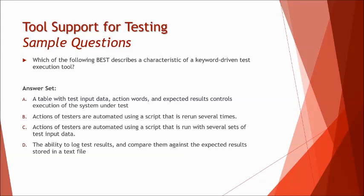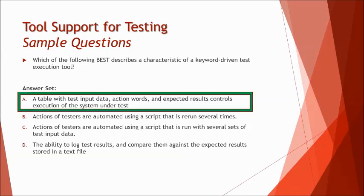Option B: actions of the testers are automated using a script that is run with several sets of test input data — that is a parameterization step, similar to repetition testing, which is the concept behind data-driven testing. Option C is similar to B. Option D: the ability to log test results and compare them against expected results stored in a text file — that could describe a test comparator or a verification checkpoint in an automation script. So B, C, and D are false, and A is the right answer for keyword-driven testing.